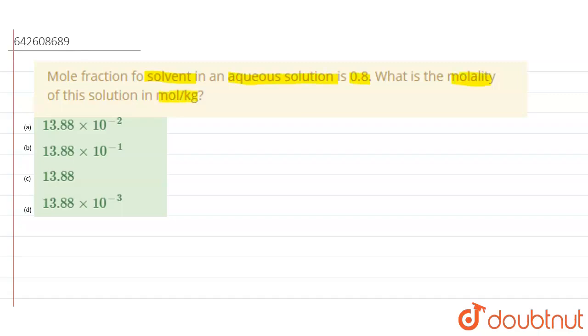So first of all, let us write the formula. The formula is molality equals to the mole fraction of solute divided by the mole fraction of solvent into 1000 upon molar mass of solvent.